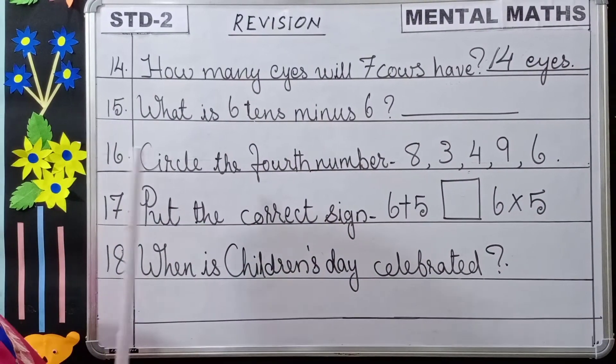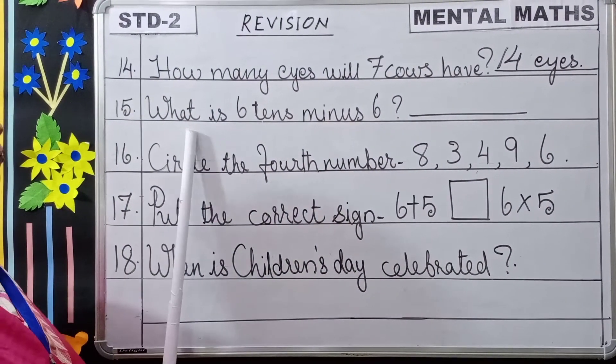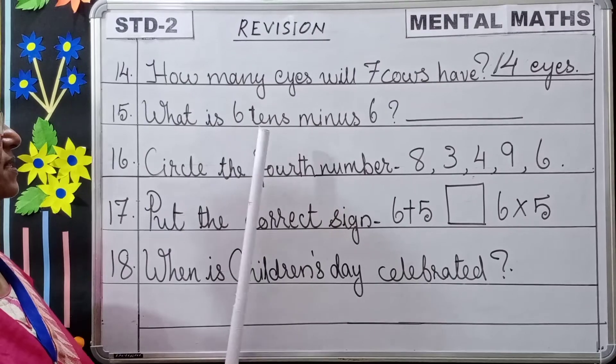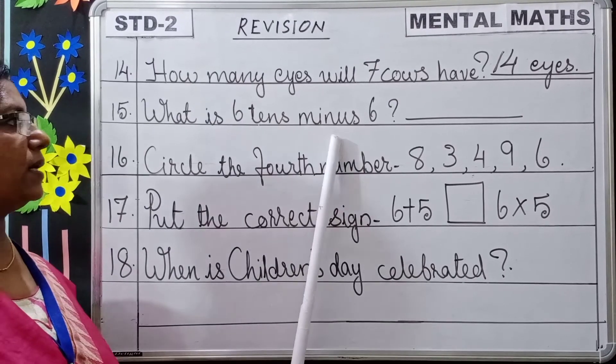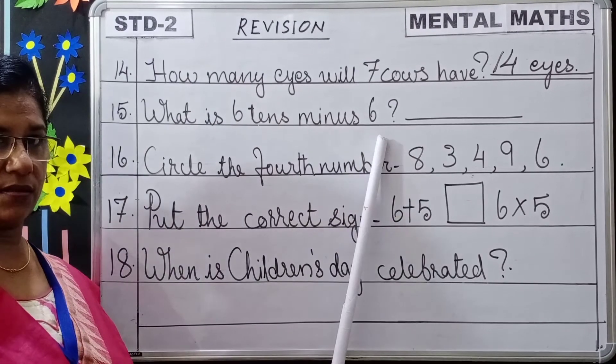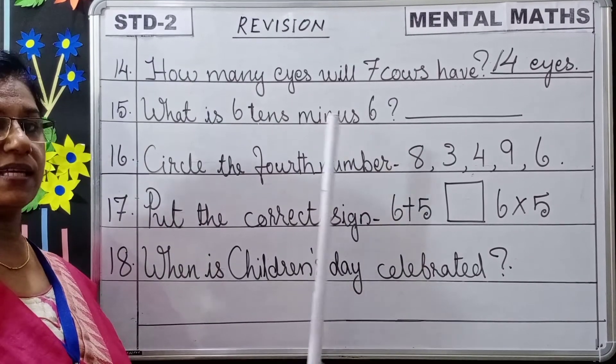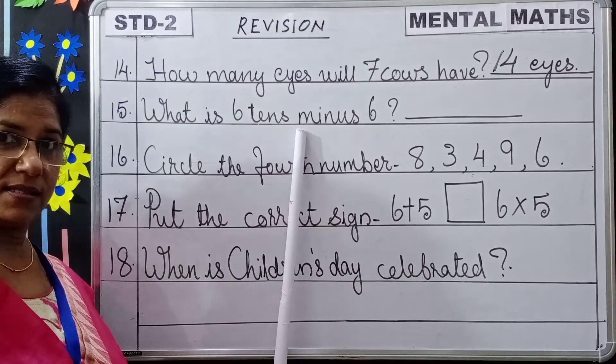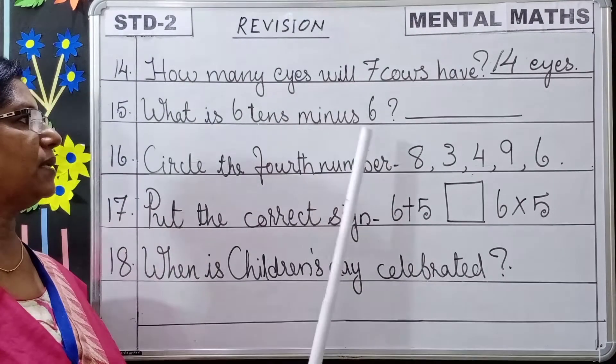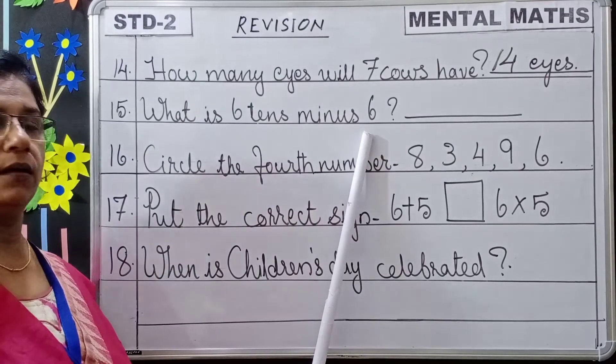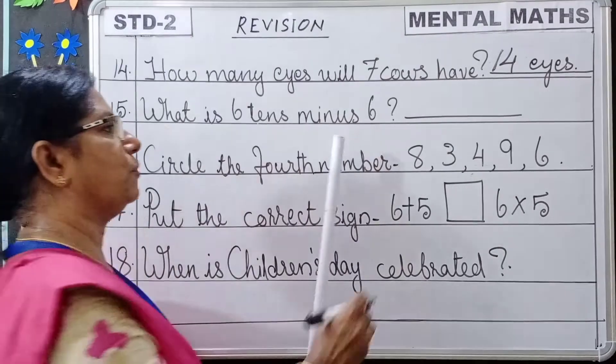Next question: What is 6 tens minus 6? 6 tens are 60. Minus 6 is 54.